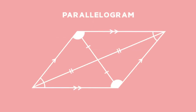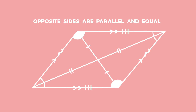Those are the ones that we are going to discuss now. A parallelogram is a special quadrilateral in which the opposite sides are parallel and equal in length. In the diagram you can see that the opposite sides are parallel to each other and are also equal to each other.